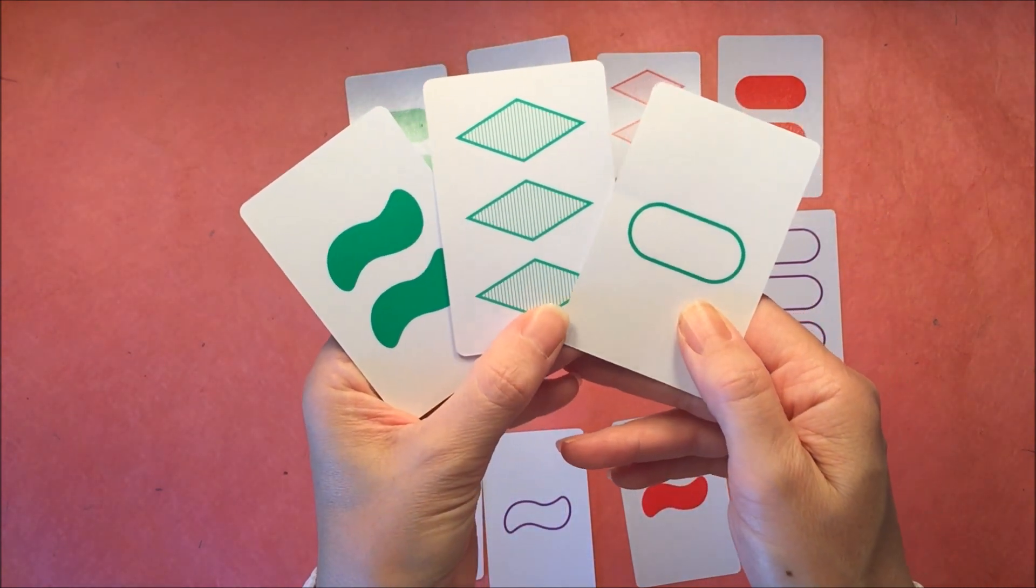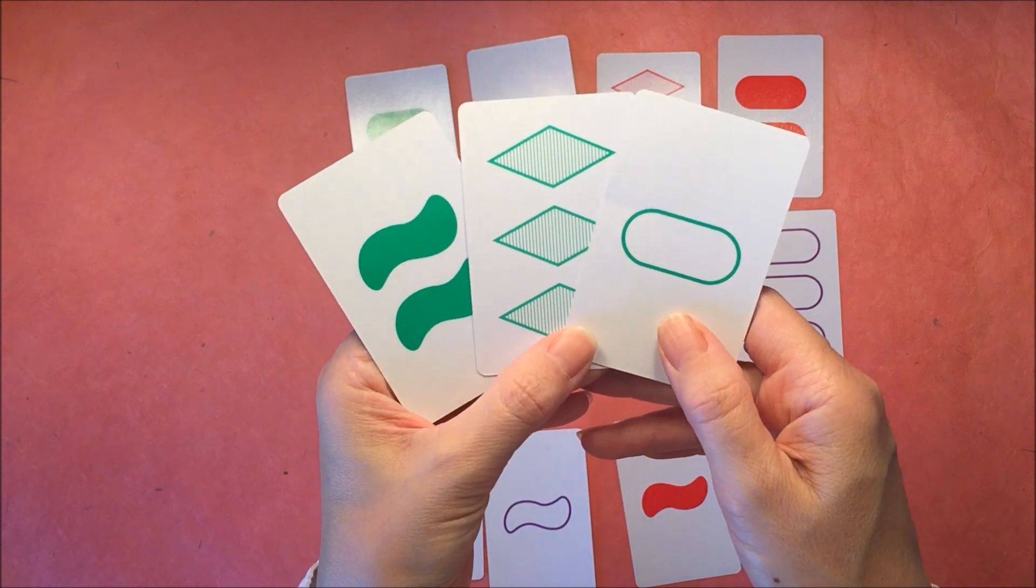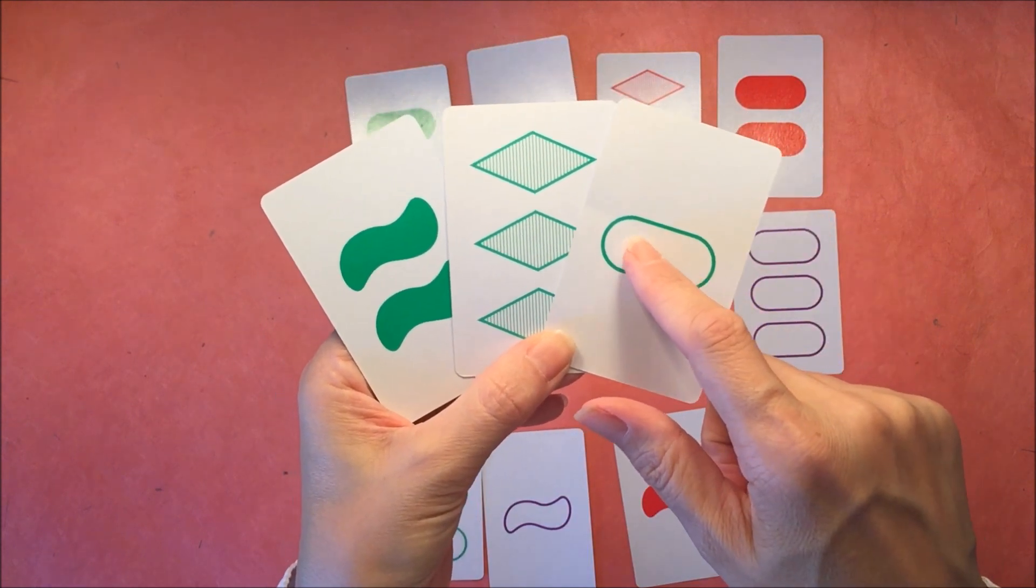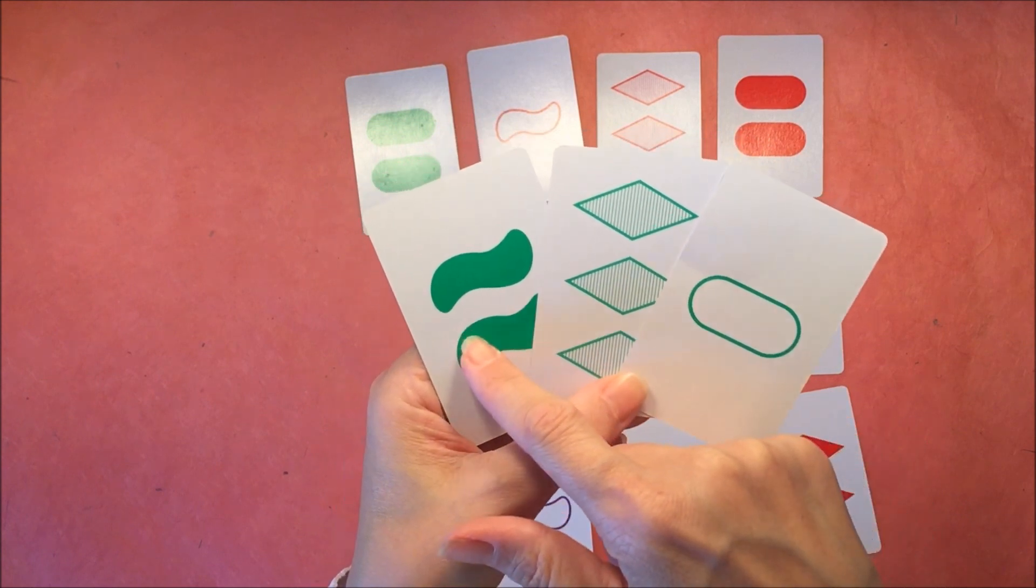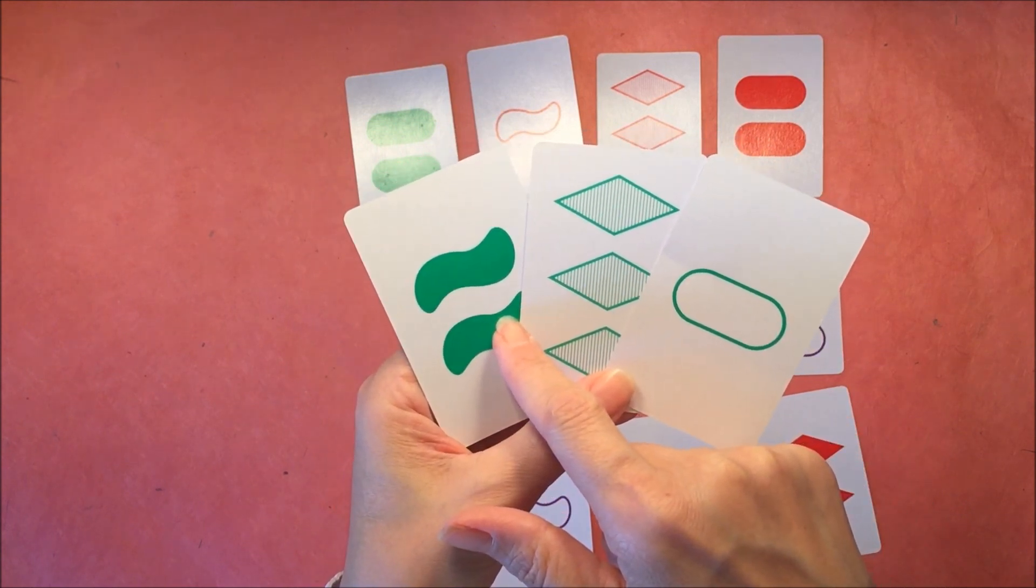They're all green, but they have different shadings. And that one is empty and it's an oval, and that's like striped and diamonds. And this is filled and squiggly. So this makes a set.